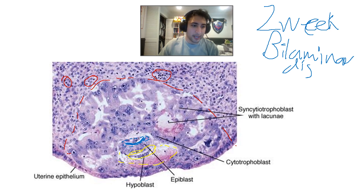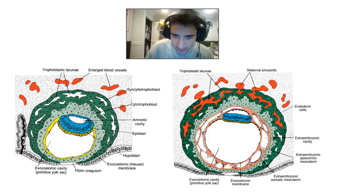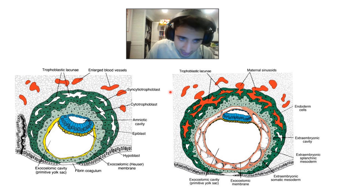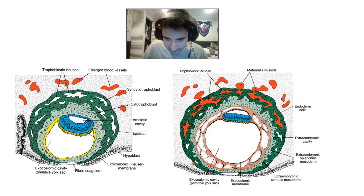Looking at the syncytiotrophoblast: you have lacunae with enlarged blood vessels, and the syncytiotrophoblasts grow into them and break down the endothelial lining of maternal sinusoids so they bleed into the lacunae. At the same time, cytotrophoblasts start pushing into the syncytium, making finger-like projections — those are primary villi. The extraembryonic mesoderm will also be involved in driving into the syncytiotrophoblasts to help form the villi.